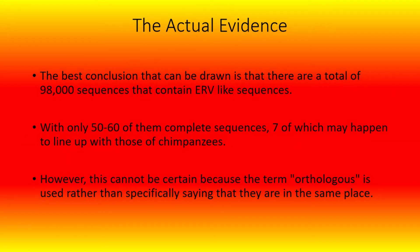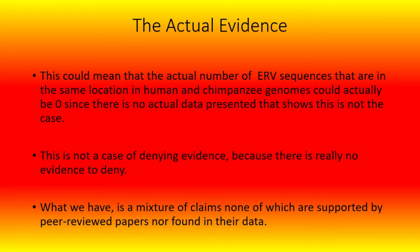The best conclusion that can be drawn is that there are a total of 89,000 sequences that contain ERV-like sequences, with only 50 to 60 of them being complete sequences, and 7 of which happen to line up with those of chimpanzees. However, the term 'orthologous' is used rather than specifically saying that they are in the same place. This could mean that the actual number of ERV sequences in the same location in human and chimpanzee genomes could actually be zero. What we have is a mixture of claims, none of which are supported by peer-reviewed papers nor found in their data.